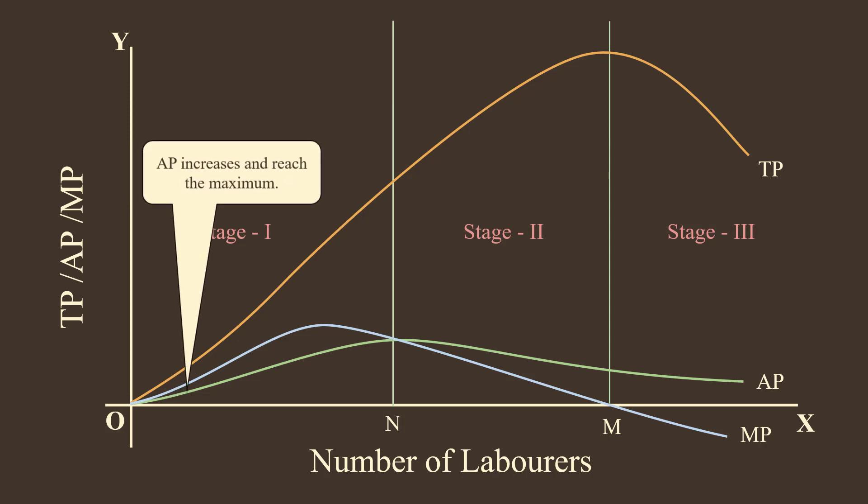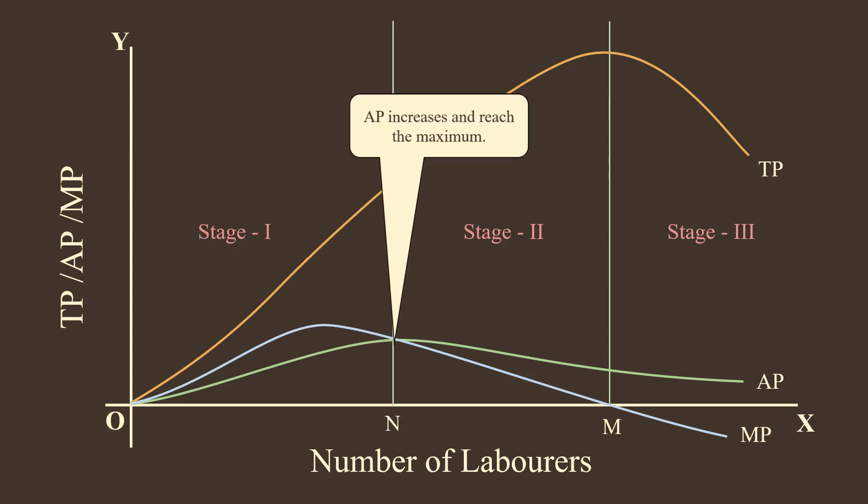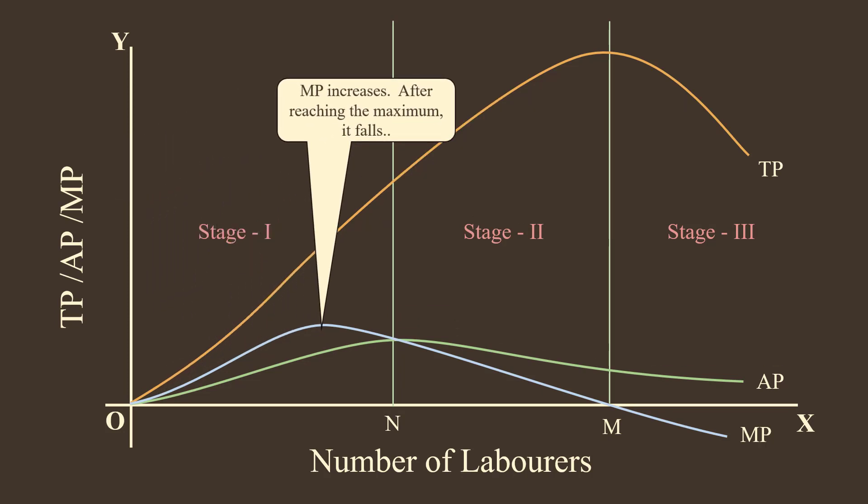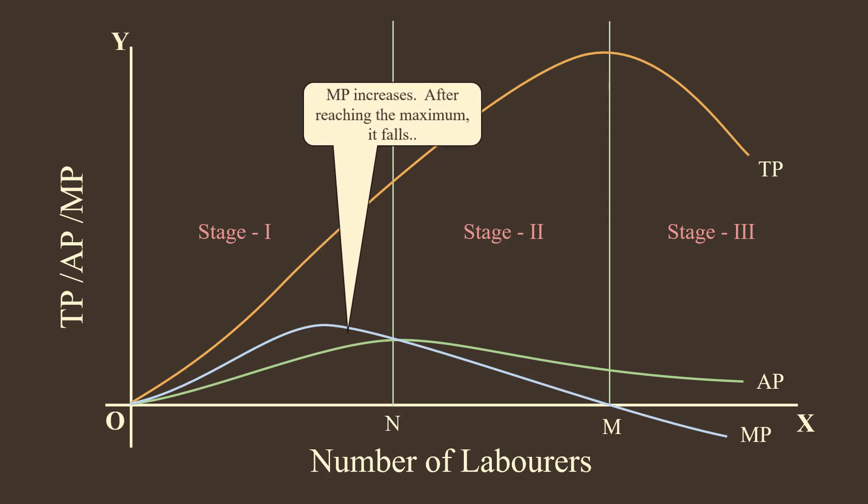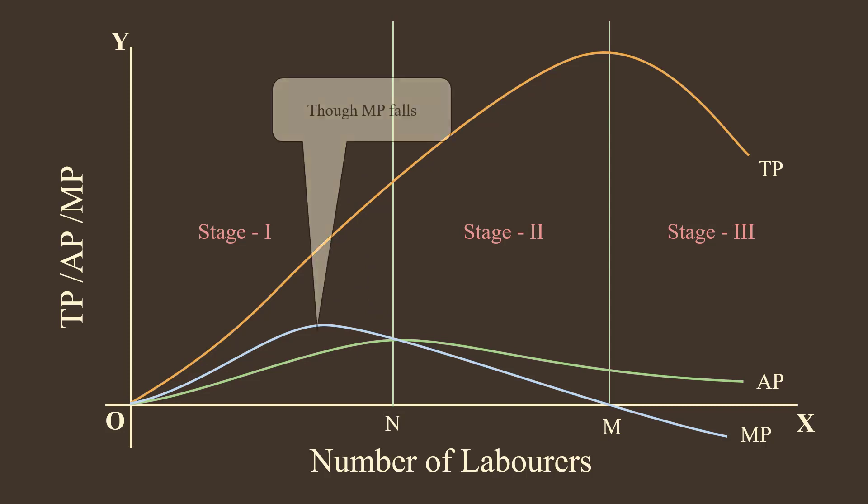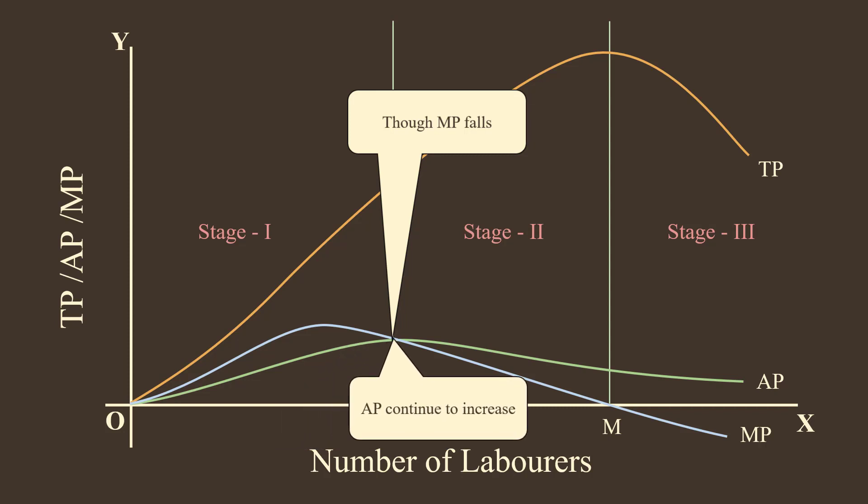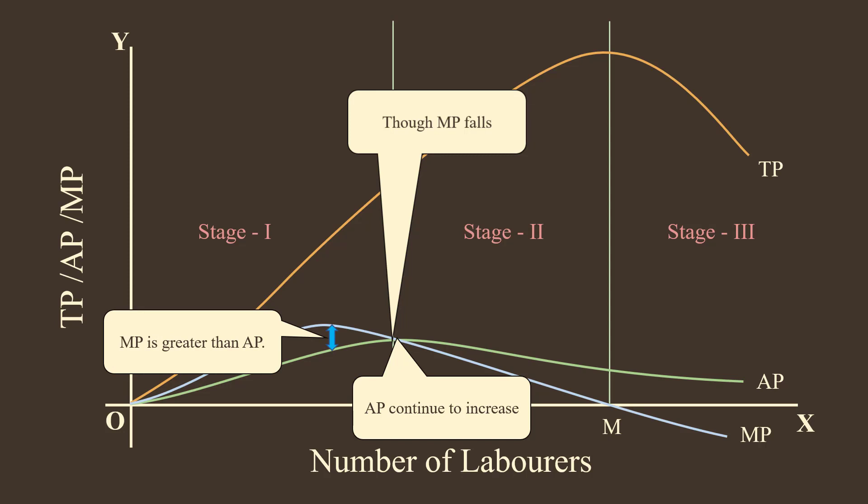In this stage: 1. Average product increases and reaches the maximum. 2. Marginal product increases, after reaching the maximum, it falls. 3. Though marginal product falls, average product continues to increase because marginal product is greater than average product.